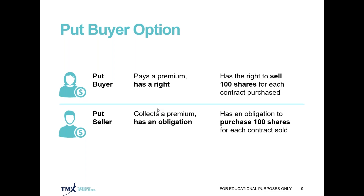Another way to use puts is as a hedge. You may hold companies or ETFs within your registered accounts that you've been holding for quite some time, and you feel there's longer-term opportunity still, but you might want to manage some shorter-term risk. While you're holding the underlying shares, you can buy that put option — we often refer to that as a married put. You own the stock or ETF and buy a put option that is married to the stock position.